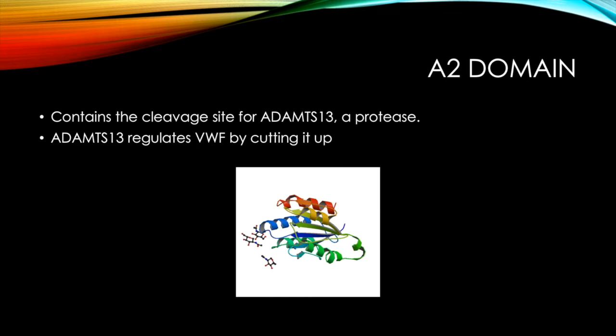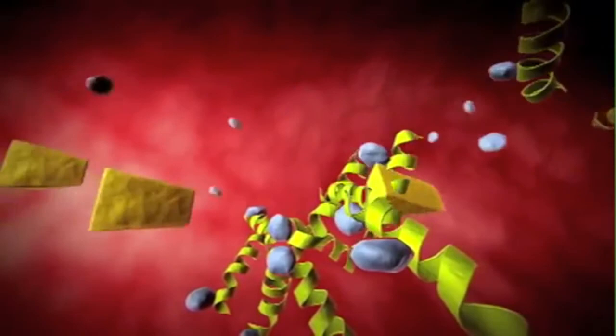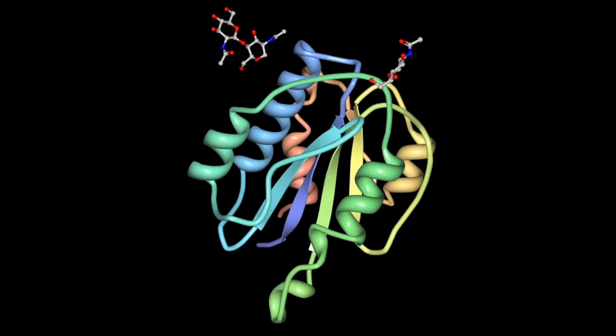In terms of the A2 domain, the important function is that it contains a cleavage site for ADAMTS13, a protease found in the plasma that prevents the platelets from clipping too much and regulates the activity of von Willebrand factor by slicing through it, as seen in this animation, thus inactivating it by making it into smaller multimers.